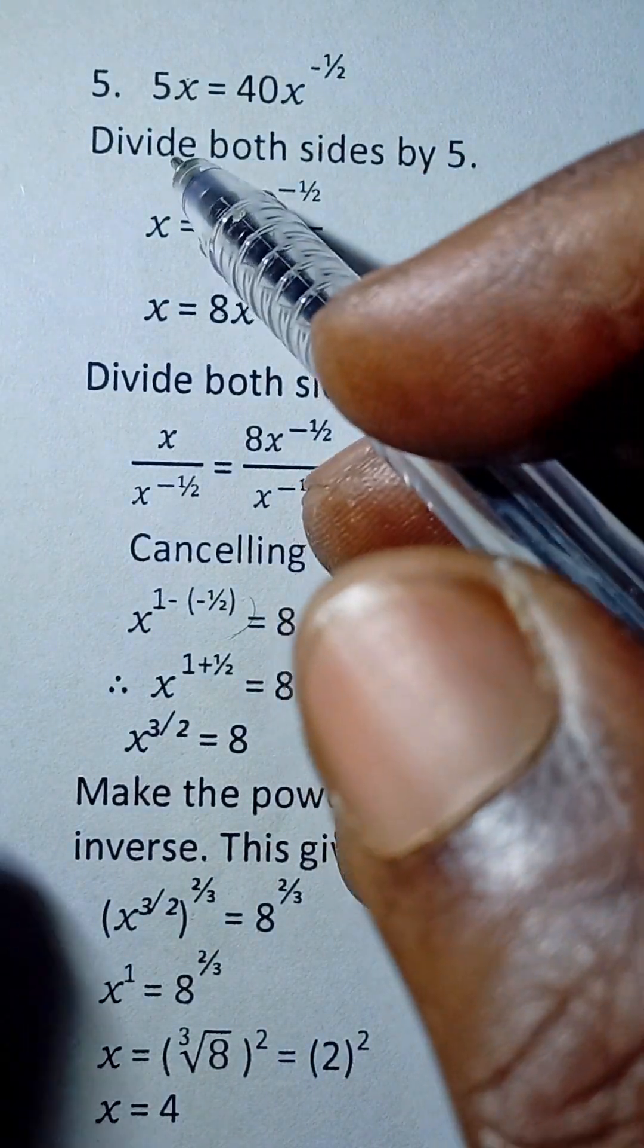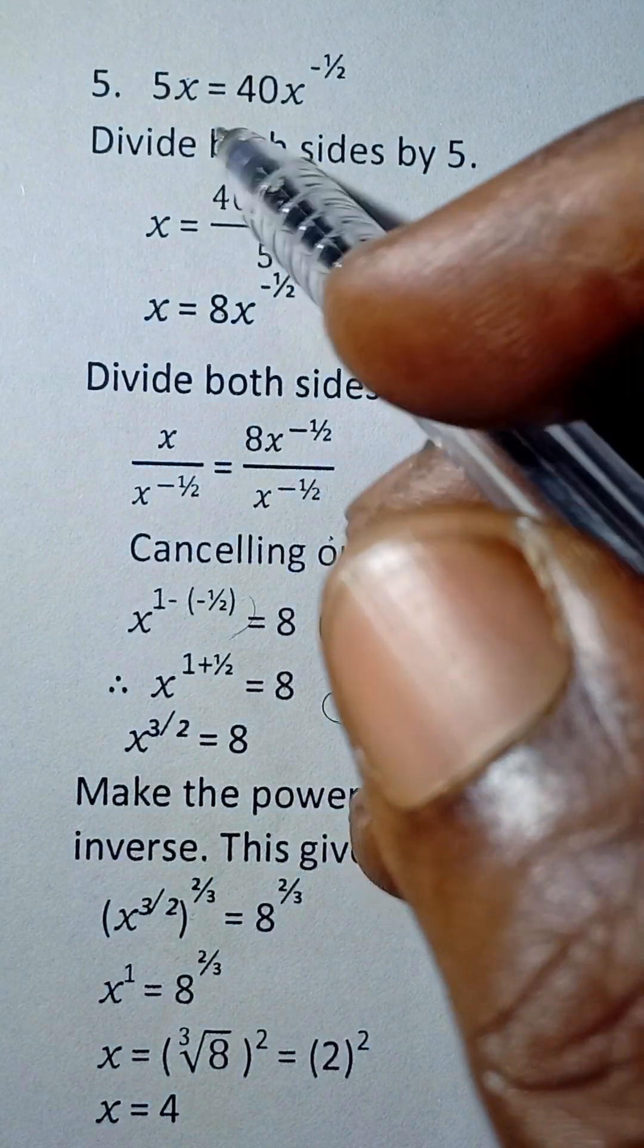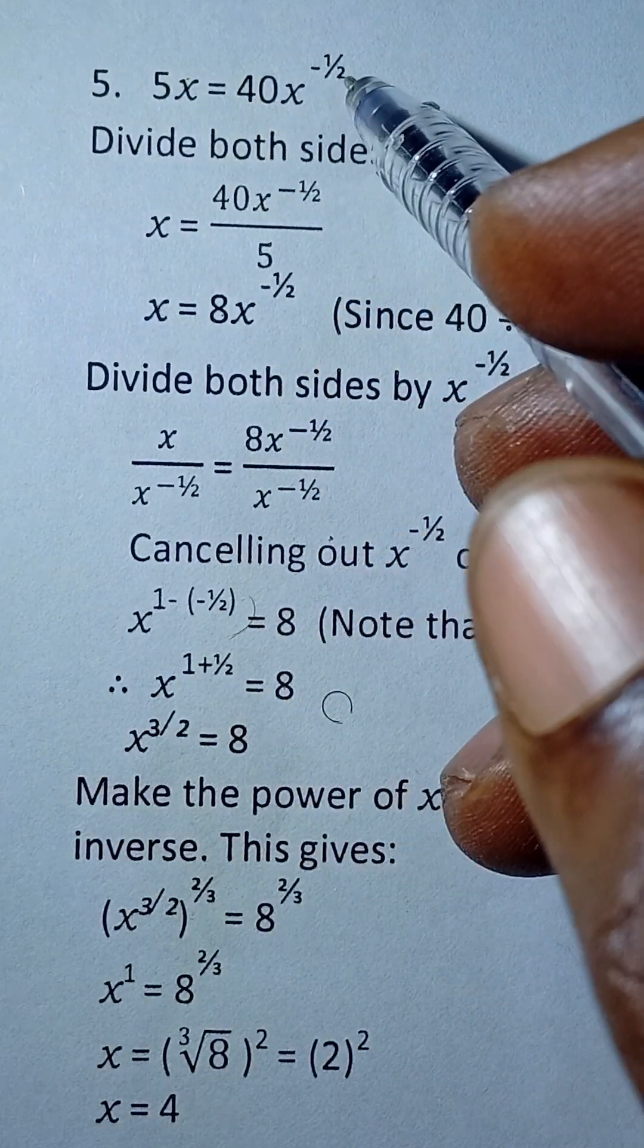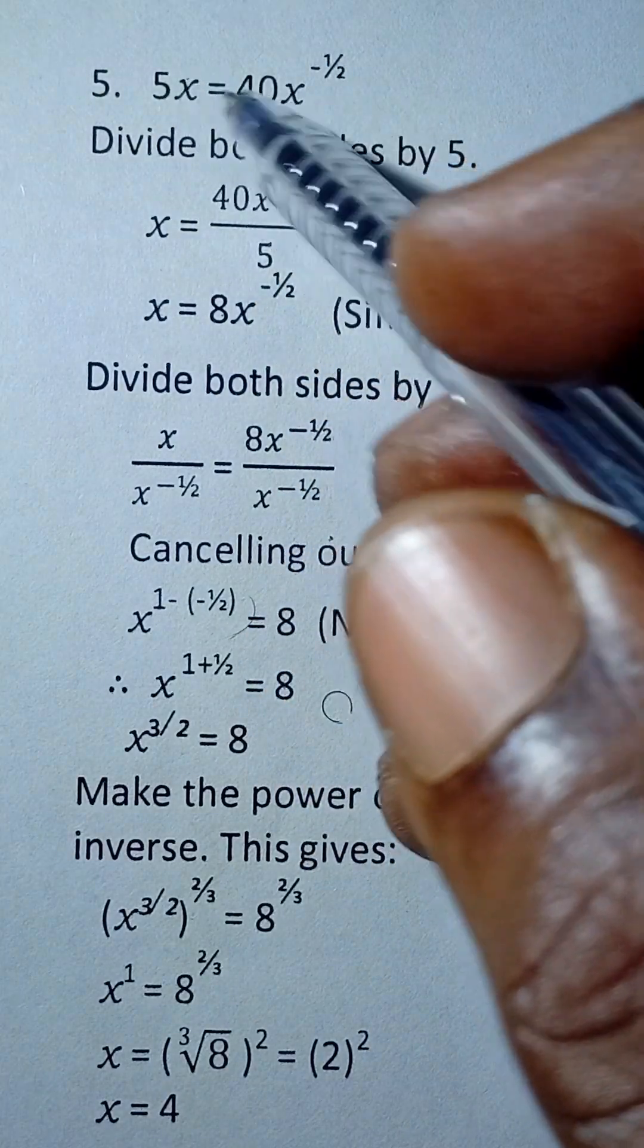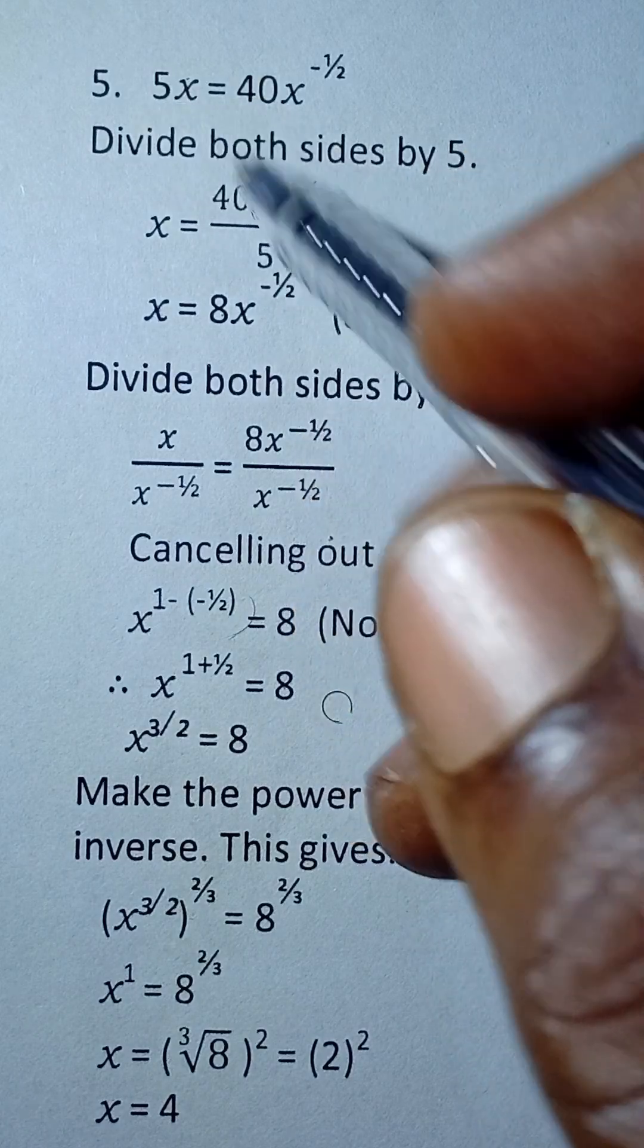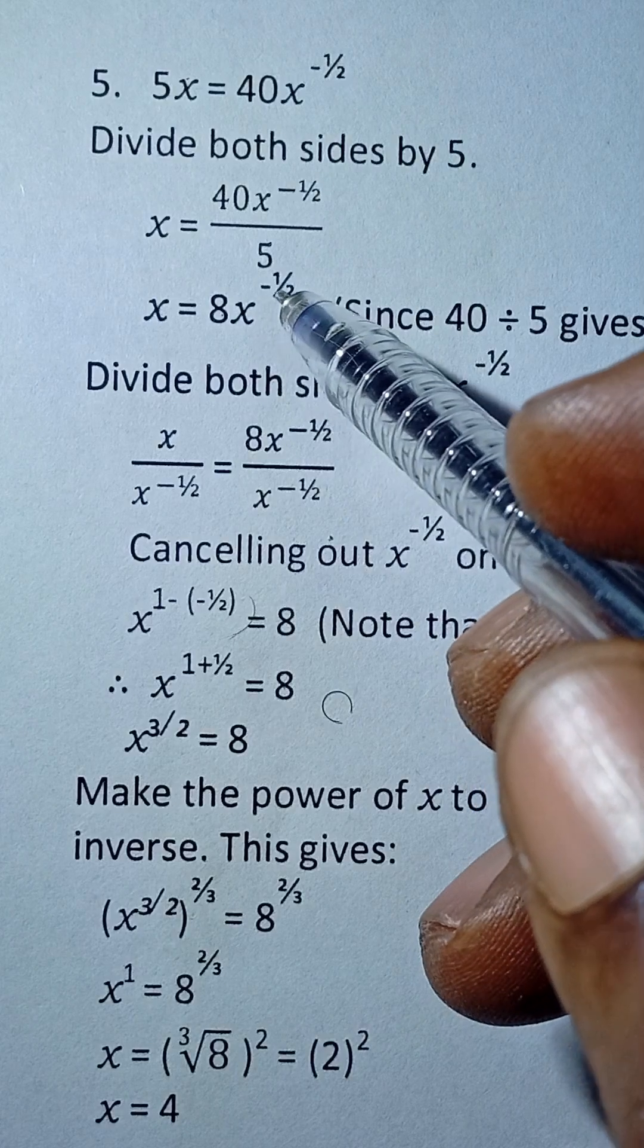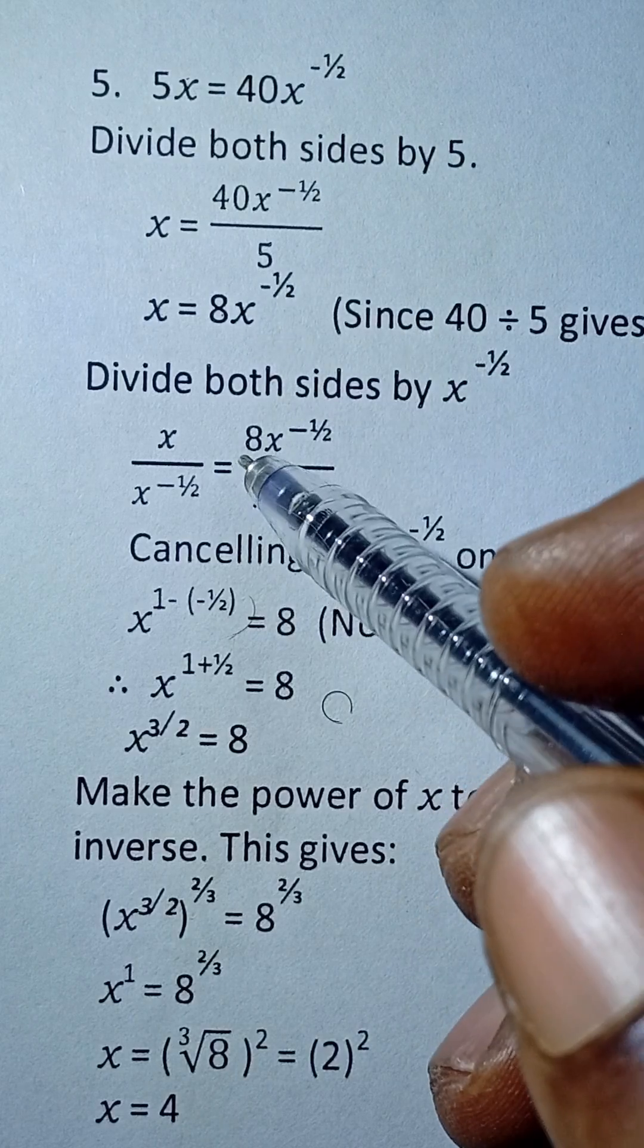Alright, let's look at this equation in indices. So here we say 5x is equal to 40x raised power minus half. The first thing for us to do is to divide both sides by 5. So when we divide both sides by 5, we are left with x is equal to 8x raised power minus half.